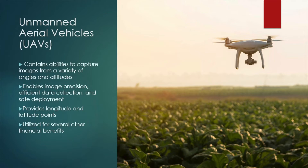UAVs also enable image precision, efficient data collection, and a safe deployment. These key features result in clear and precise images with unique information of the image recorded by the UAV. Specifically, the UAV collects longitude and latitude points for each image captured during a drone mission. The UAV then allows for feasible transfer of this information to any geographic information system, otherwise known as GIS. GIS allows for observation of images with all of the information recorded by the UAV to be displayed on each image.